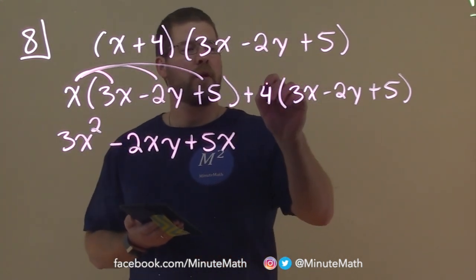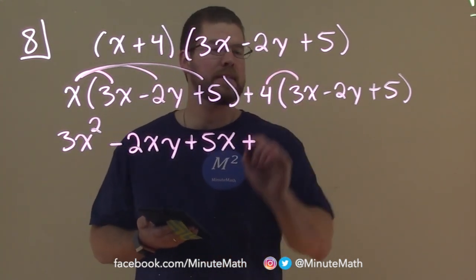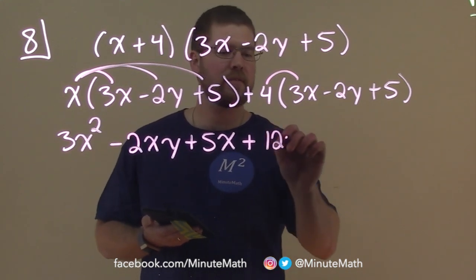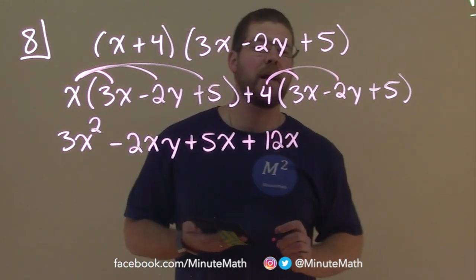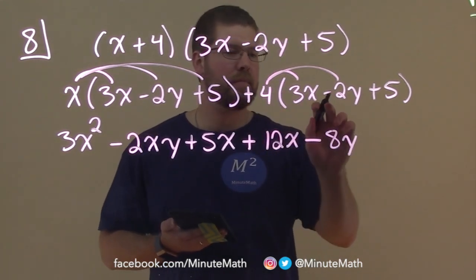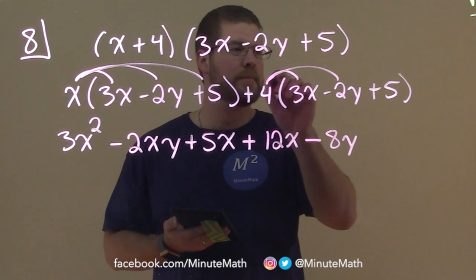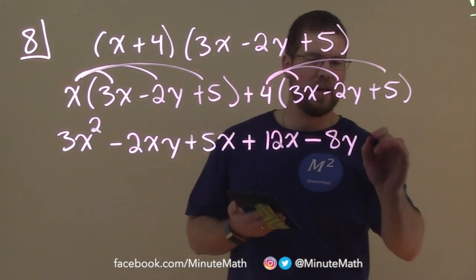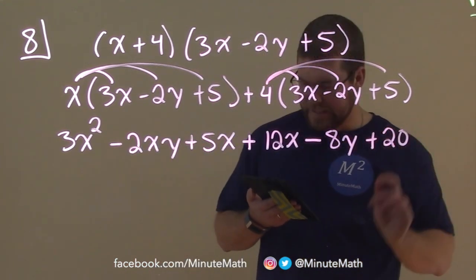Now the 4 distributing, plus here, 4 times 3x is a 12x. 4 times a minus 2y is a minus 8y, right? 4 times 2 is 8. Don't forget the negative sign or subtraction. And 4 times 5 is our 20 here.